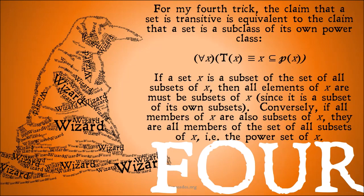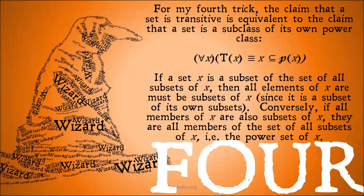For my fourth trick: the claim that a set is transitive is equivalent to the claim that a set is a subclass of its own power class. If a set X is a subset of the set of all subsets of X, then all elements of X must be subsets of X, since it is a subset of its own subsets. Conversely — it is a material equivalence, so it goes both directions — if all members of X are also subsets of X, they are all members of the power set of X.